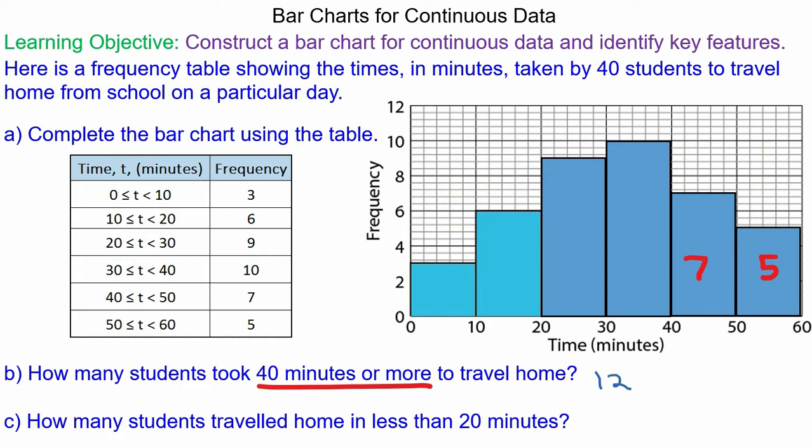How many students travelled home in less than 20 minutes? Which would be in these two bars, we have a height of 6 and a height of 3. So in total 9 students did.